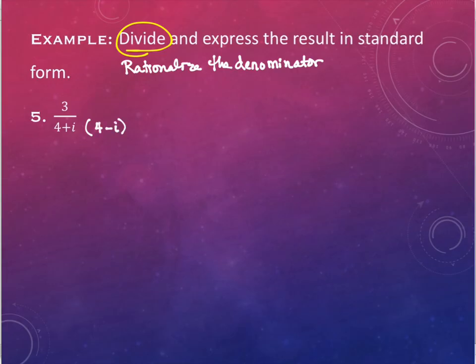Now, you know from fractions that you can't just go multiplying part of a fraction and call that the same thing. When you multiply the denominator by a value, you have to do the same thing to the numerator. So I've got to do 4 minus i on the top and on the bottom.